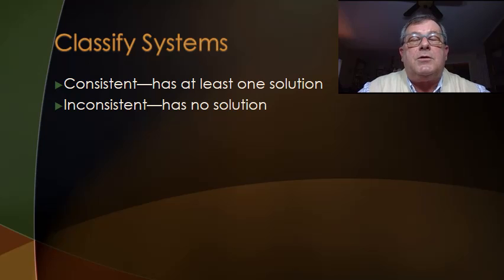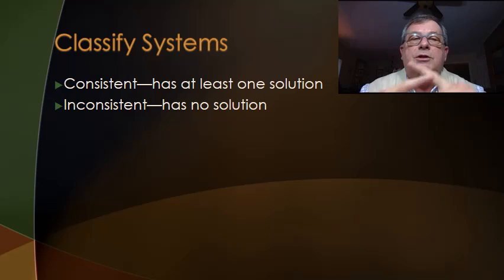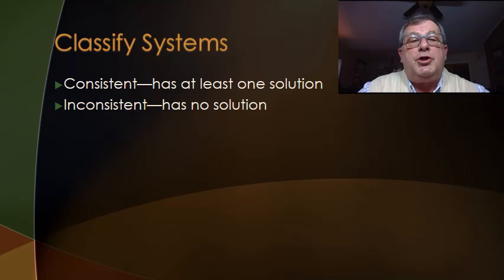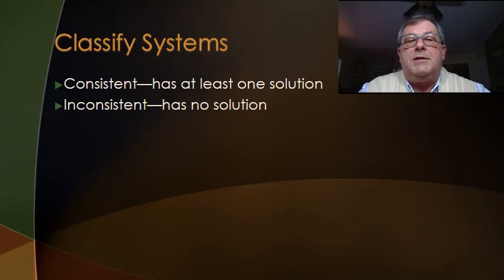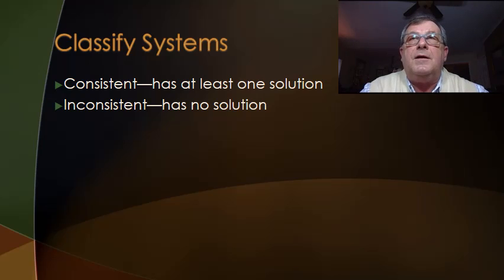For there to be at least one solution, one of two things are going to exist. Either we have linear equations with different slopes — and if they have different slopes, they are going to intersect, which means we have one solution for that system. Or, as we reduce those equations to their simplest form, if they give us the same equation, then that's going to represent the same line.